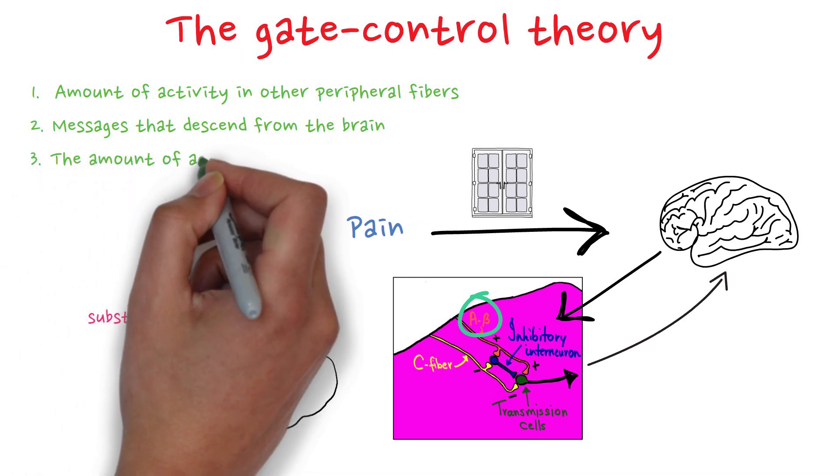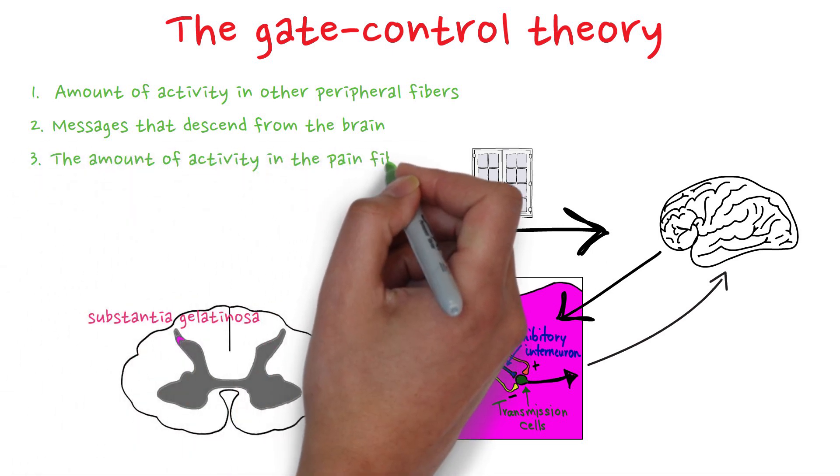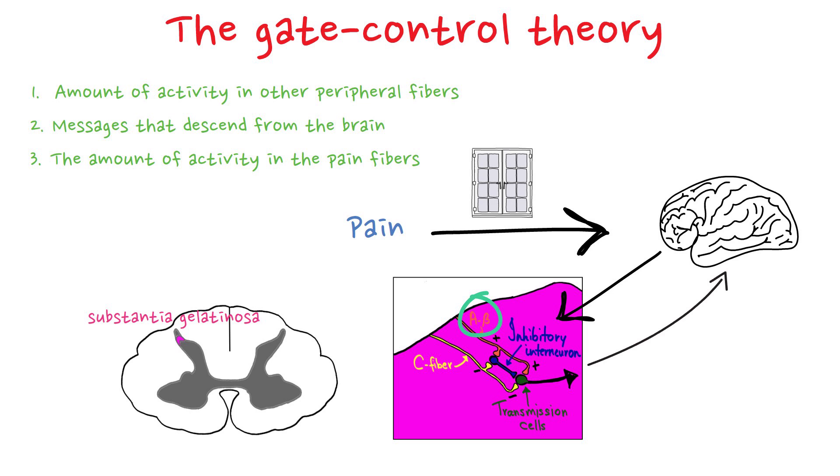Finally, we have the amount of activity in the pain fibers. Activity in C-fibers, for example, tends to open the gate. The stronger the pain stimulation, the more activity in the pain fibers.